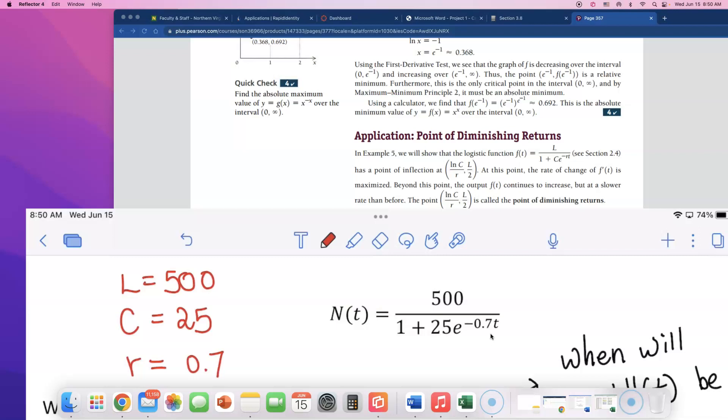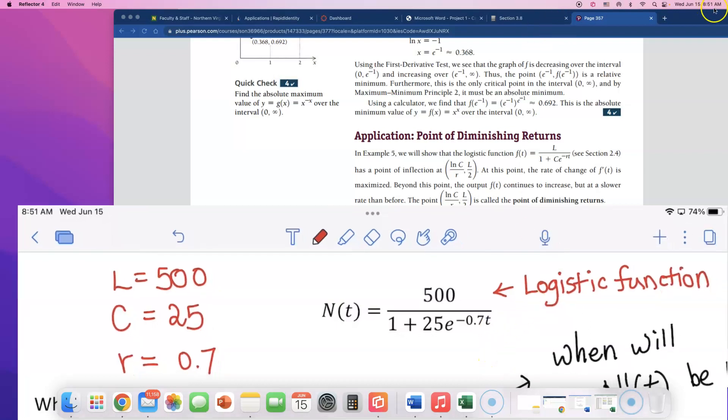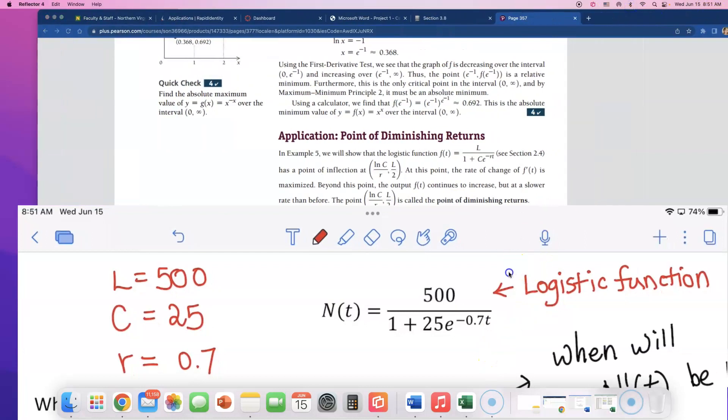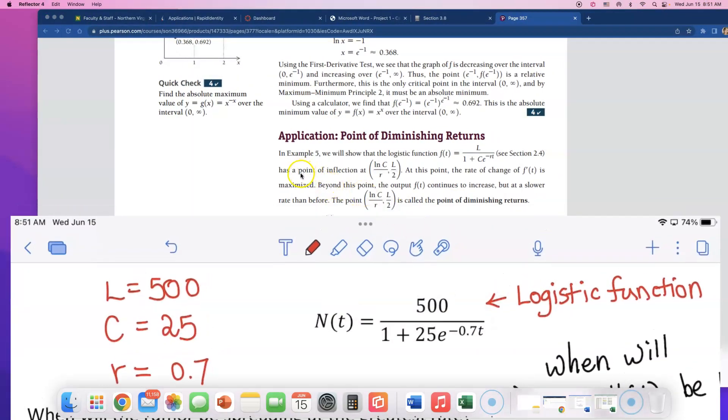And you can tell this is a logistic function. So what are they talking about this logistic function? They actually give you the formula for point of inflection. The point of inflection happens at natural log of C divided by R. And that's the t value where this point of inflection will happen. And that's really all we have to find for this problem.